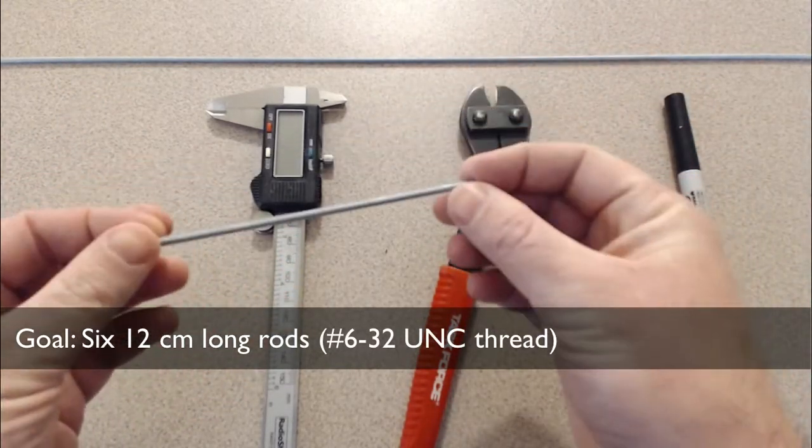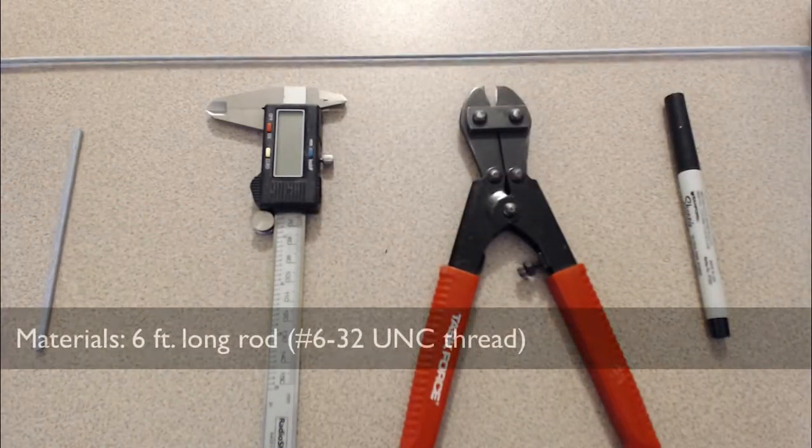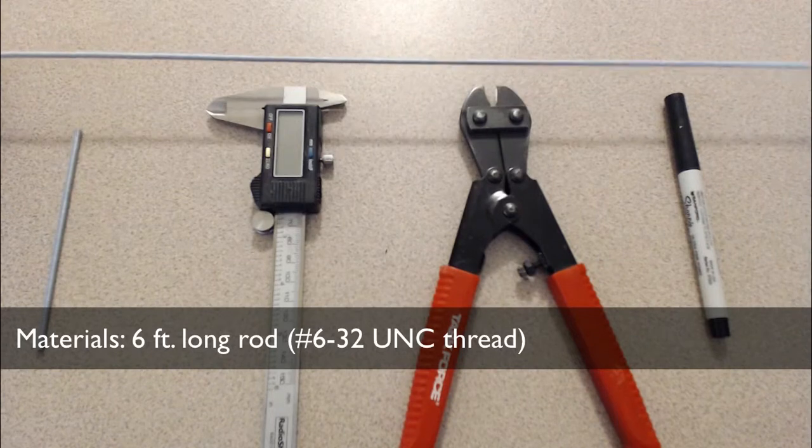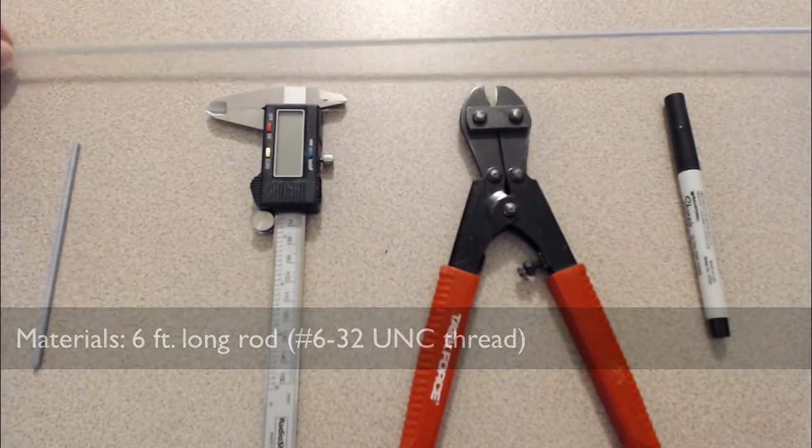They're 12 centimeter long lengths of 6-32 rod. We're going to start with a six foot long section. They're never sold in exactly the lengths that you want, so we have to cut them down to size.